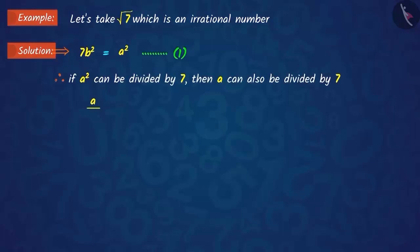Suppose when we divide a by 7, we get c as a quotient, where c is an integer.